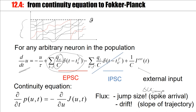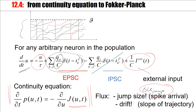We also have continuous terms: a continuous term caused by the external input current and by the decay. Now we will use the continuity equation. On the right-hand side, we have the flux, which has two components: the jump flux, where delta U jump and the spike arrival frequency play a role, and the continuous drift flux, where the slope of the trajectory plays a role. The slope is minus U over tau plus 1 over C times I external.